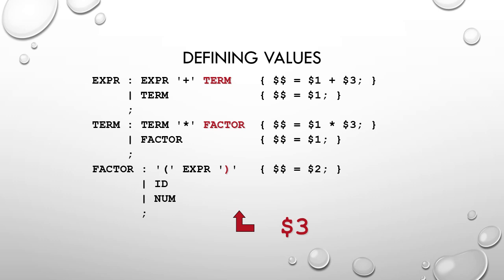Once we know what $1, $2, and $3 represent, we can understand what the semantic rules signify. $$ equals $1 plus $3 for the first production rule means the value of the first term is added with the value of the third term, and the result is stored as the attribute of the left-hand side term. At runtime, $$ equals $1 plus $3 is replaced with the actual symbols associated with the production rules.